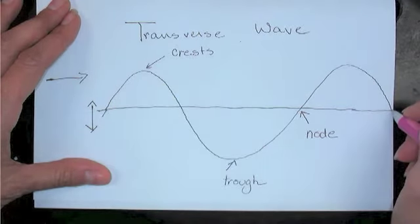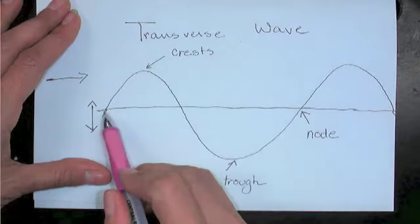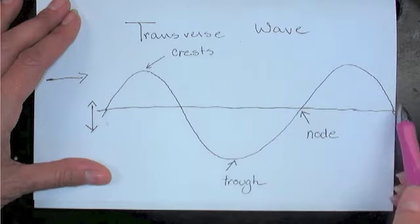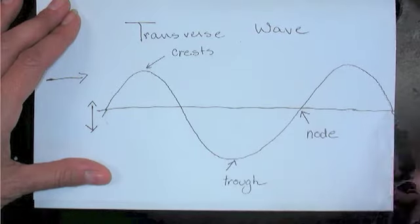Actually, if we extend our wave a little bit, there's a node there, a node there, a node there, and a node there.